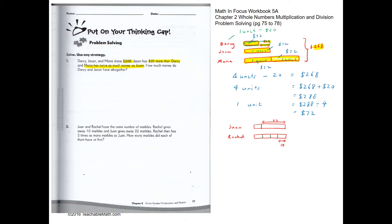Darcy has $52 and Jason has $72. Together, Darcy and Jason have $52 plus $72, which is $124.